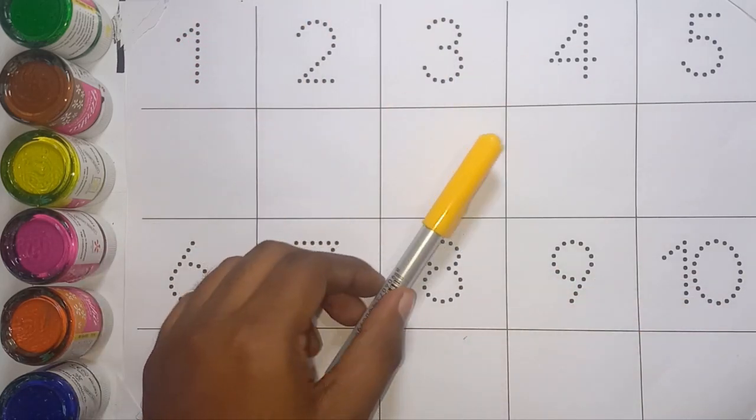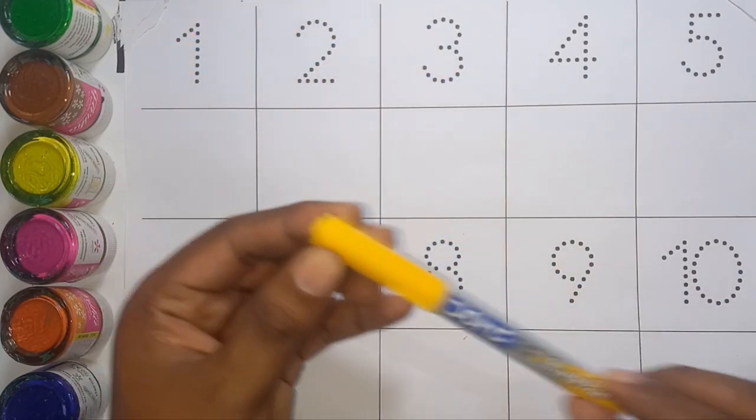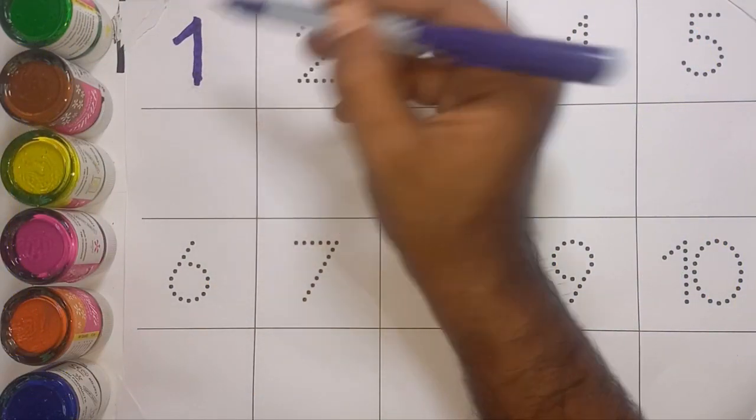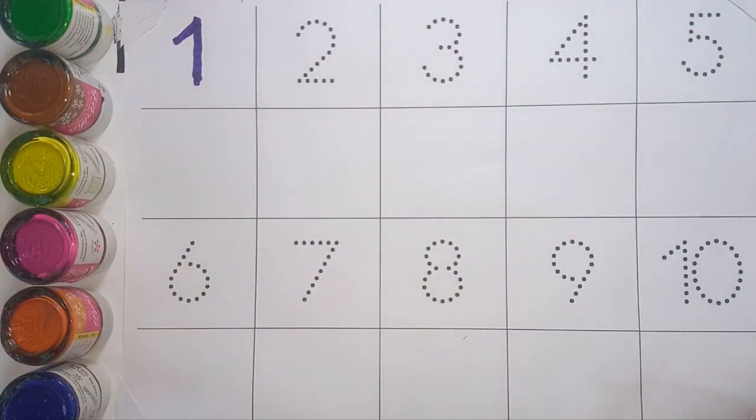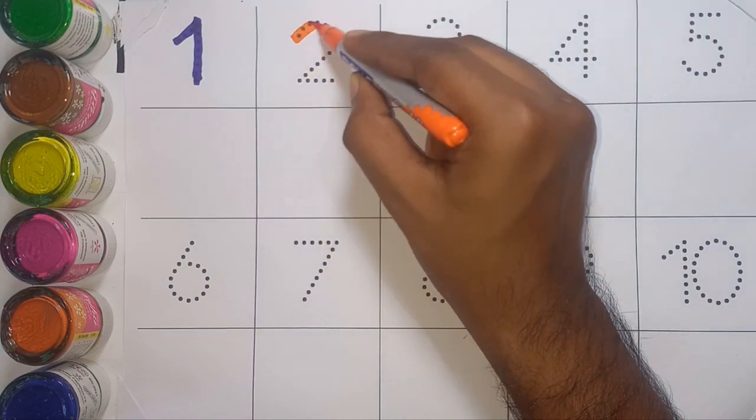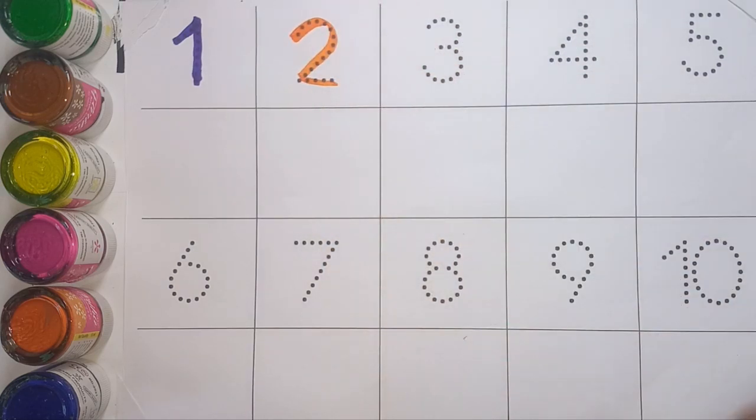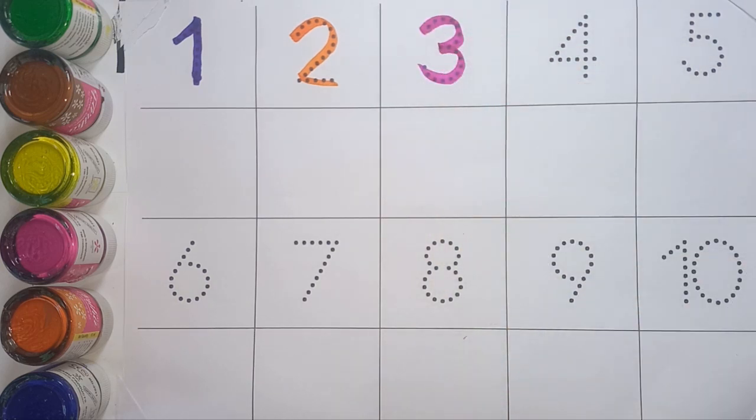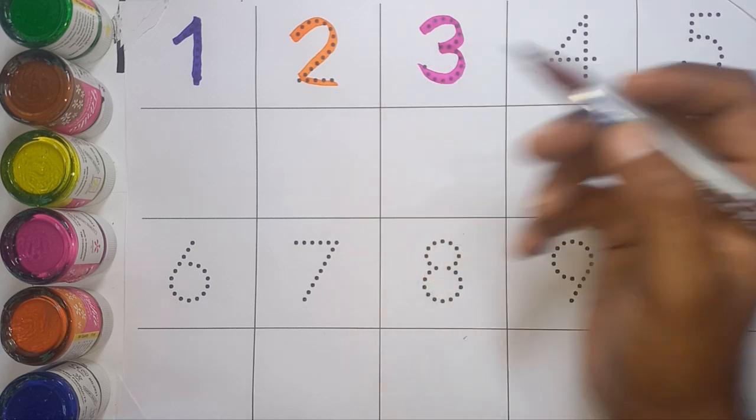This is red color, this is yellow color. One, one, orange color. Two, T-W-O, two, pink color. Three, T-H-R-E-E, chocolate color.